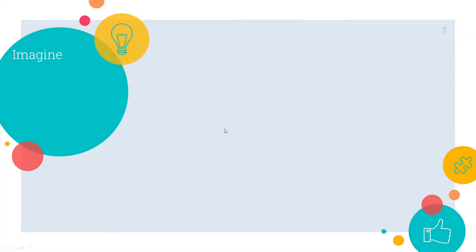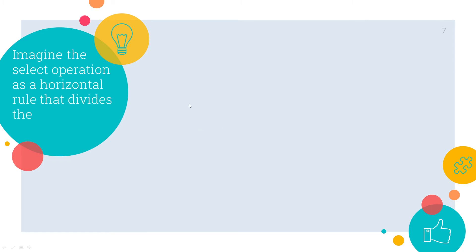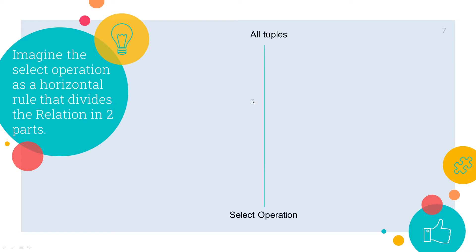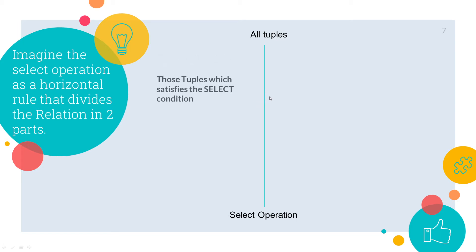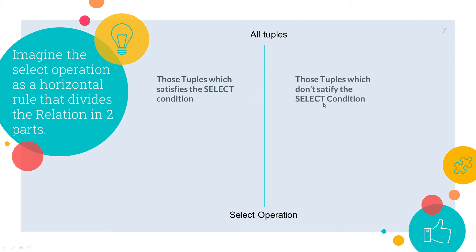Now how does the select operation work? Basically what it does is it divides the entire table into two parts. The select operation acts like a horizontal filter — it divides the tuples into two parts: the tuples that satisfy the select condition and the tuples that don't satisfy the select condition.